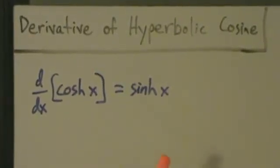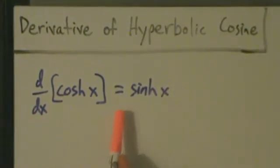Alright, let's go ahead and do the derivative of the hyperbolic cosine. So d/dx of cosh x equals sinh x. It's not negative sinh x as you might expect, because the derivative of cosine is negative sine, but for hyperbolic functions it's a little bit different.